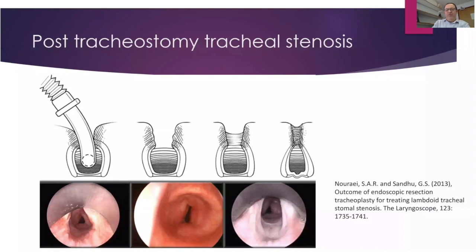Post-tracheostomy stenosis — what we call in our unit a 'lumboid' or A-frame deformity — is mostly related to over-resection of the cricoid cartilage. When doing a tracheostomy, make the smallest window possible: I do a five-by-five millimeter window through a single tracheal ring, then make four small cruciate cuts from each corner to release and open the ring without losing cartilage integrity. Use the smallest tube possible. When you end up with scar tissue, the walls get pulled in creating the A-frame deformity, which endoscopic approaches can't really fix — the true treatment is tracheal resection.